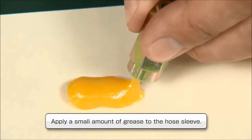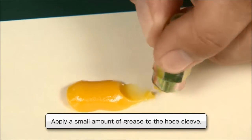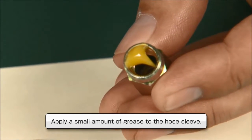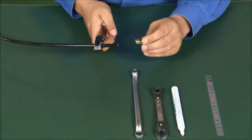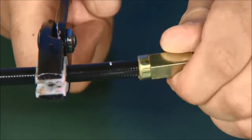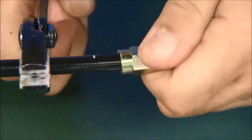Apply a small amount of grease to the hose sleeve. Use your hand to screw the hose sleeve over the hose, turning 1 revolution counter clockwise.